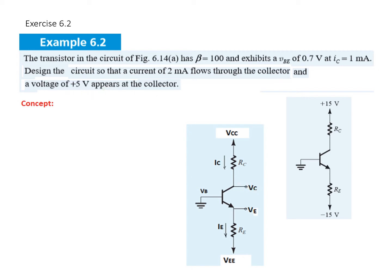A voltage of 0.5 appears at the collector. The concept I want to highlight is the terminologies used: the battery voltage supplying the collector is called VCC, the collector voltage itself is called VC. Similarly, the battery supplying the emitter is called VEE, the emitter voltage is VE, the battery supplying the base is VBB, and the base voltage itself is called VB.